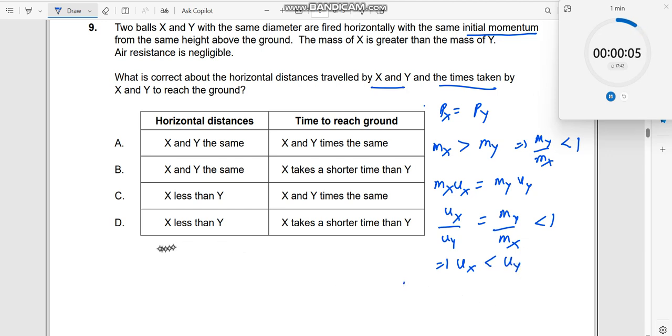Now, what is the range given by? Range R is equal to U into T, Ux into T. Horizontal component of velocity multiplied by time taken. So, as a result of it, now the range depends on U as well as time T.